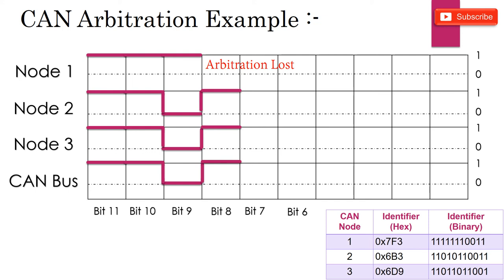At 8th bit, both node 2 and 3 are sending recessive bit. So the bus state will remain at recessive.